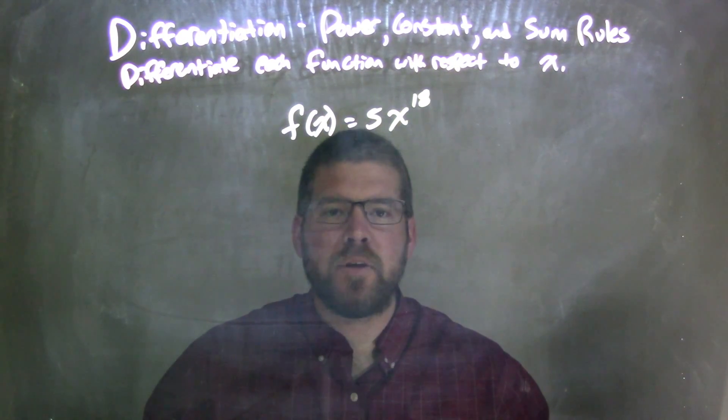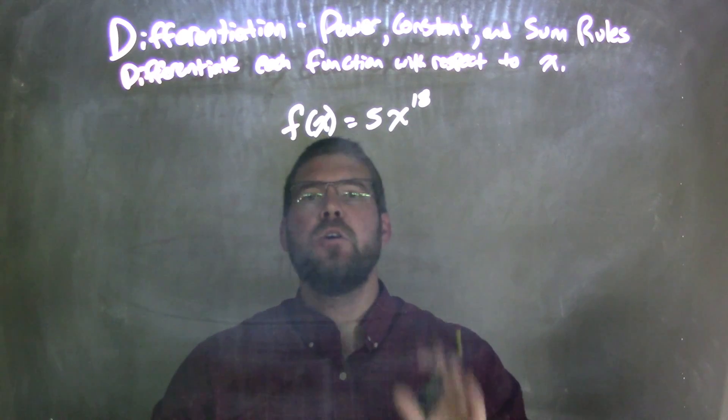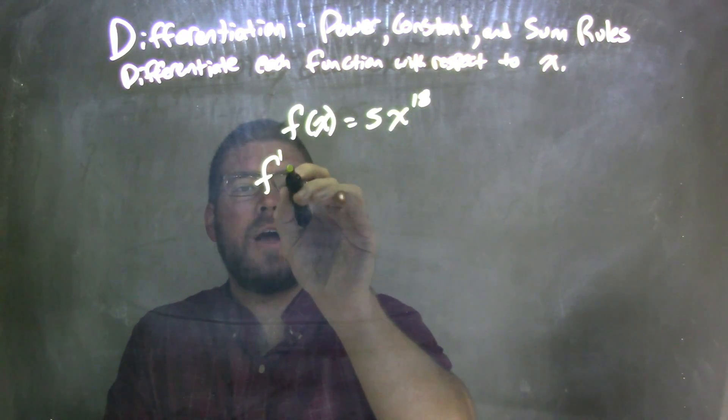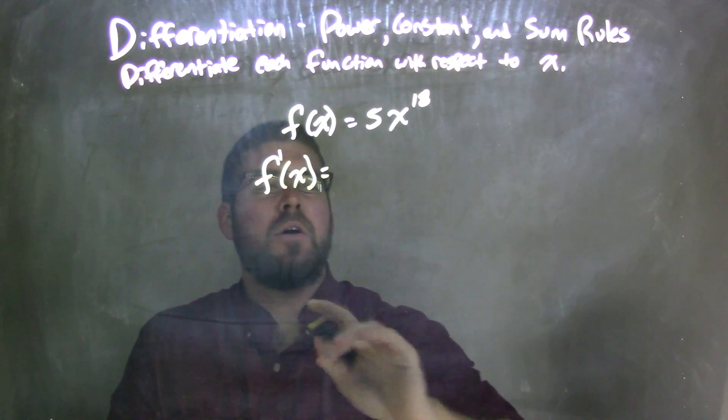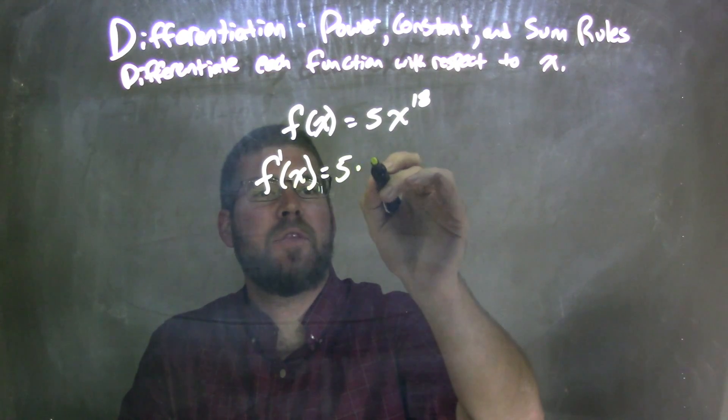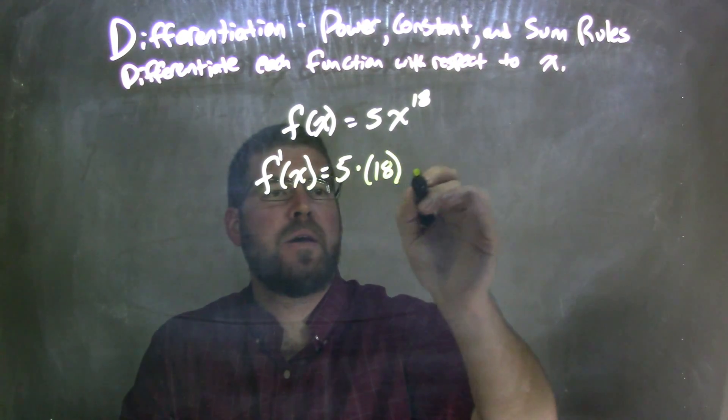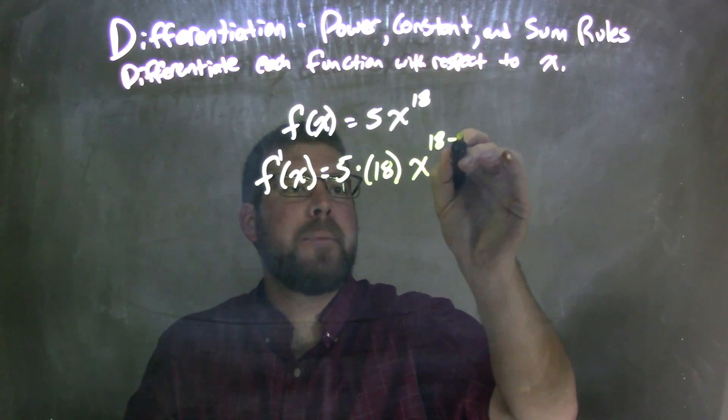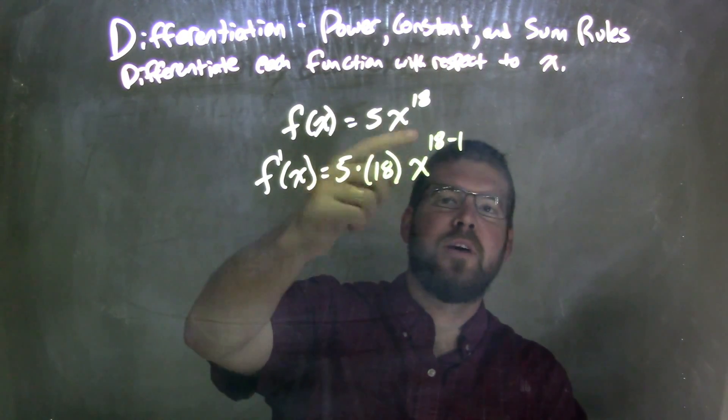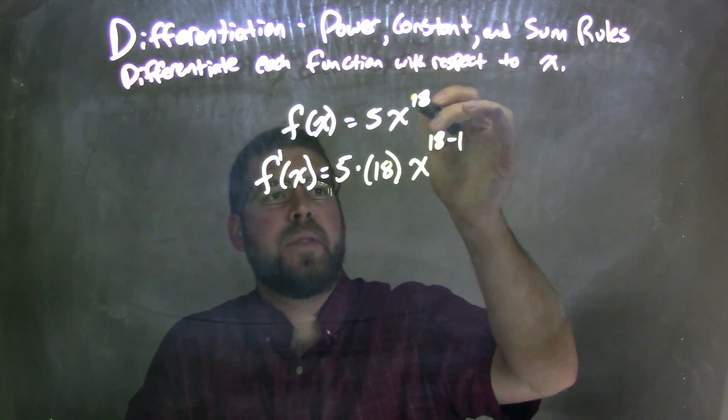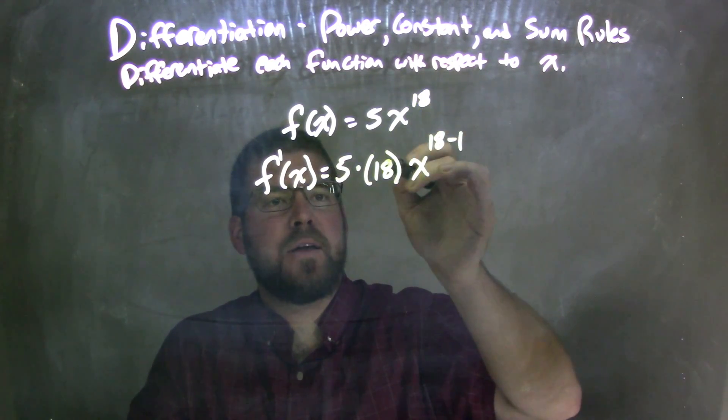Right here, I'm going to be using the power rule. So when I take my derivative, f prime of x, this exponent, this power, is going to come down up front. So we have 5 times that power, 18, times x to the power of 18 minus 1. We take whatever that exponent was, and we subtract 1 from it. So we bring the power down, right down up front. So 18 comes down here.